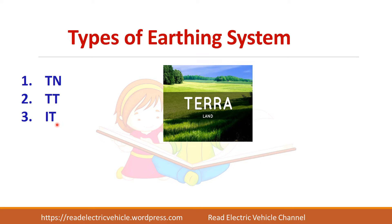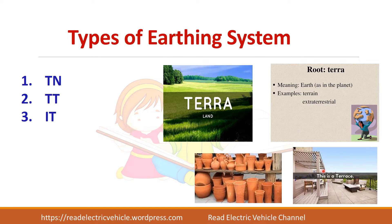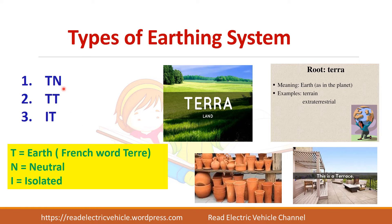T is a French word meaning land. We use this root everywhere — terrain, extraterrestrial, terracotta, terrace — all relating to land or earth. So T stands for earth, N stands for neutral, and I means isolated. Based on this, there are three different types of earthing system.